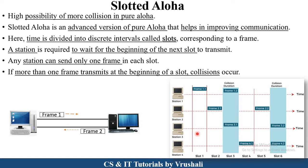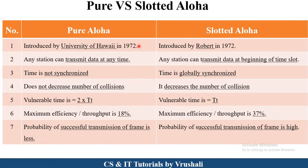In Slotted Aloha, the sender sends frames according to its assigned time slot. Now the differences: Pure Aloha was introduced by the University of Hawaii in 1972, and Slotted Aloha was introduced by Robert in 1972. In Pure Aloha, any station can send data at any time, but in Slotted Aloha every station has its own time slot and can only send at the beginning of that slot. In Pure Aloha time is not synchronized, but in Slotted Aloha time slots are assigned to each station, making it globally synchronized.